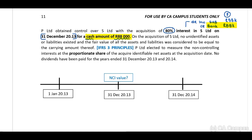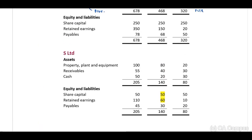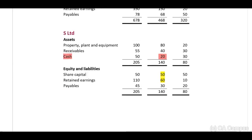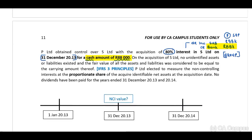In P Limited's separate records, the bank is credited with 88,000. However, when we consolidate for the group, S Limited has cash available of 20,000. Therefore, the net effect on the group is an outflow of 88,000 and an inflow of 20,000 relating to the cash available in S Limited's records, giving a net outflow of 68,000.